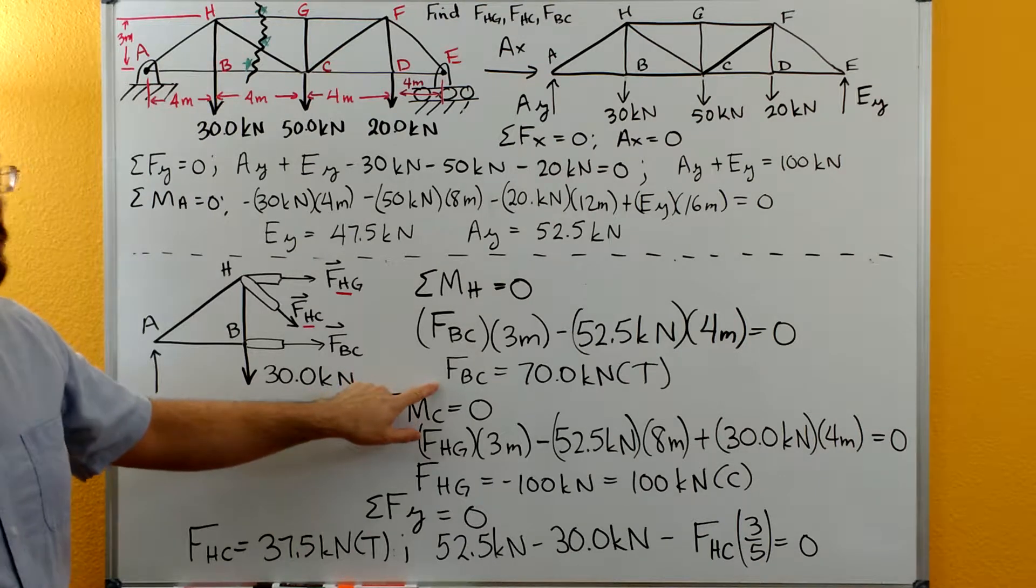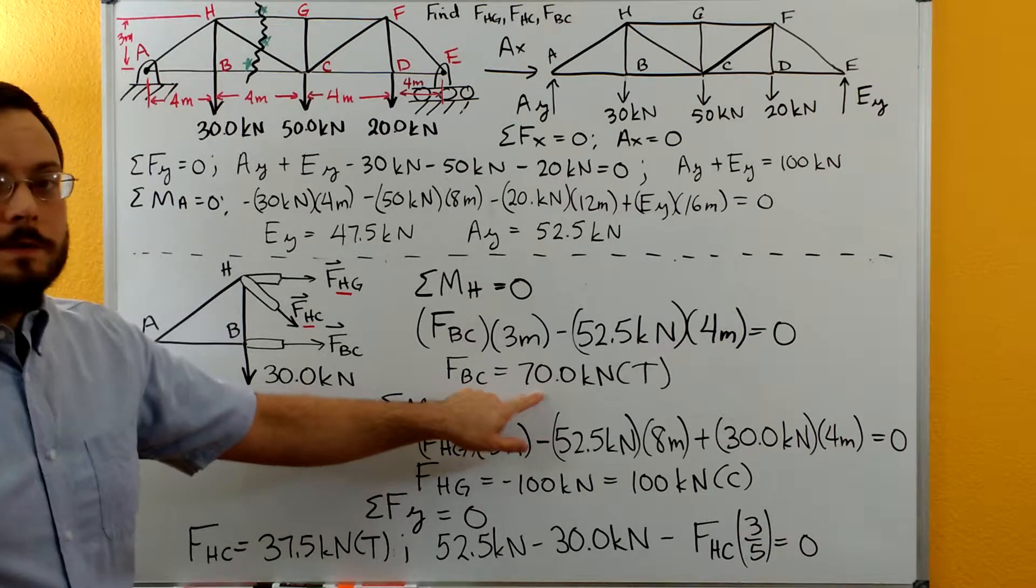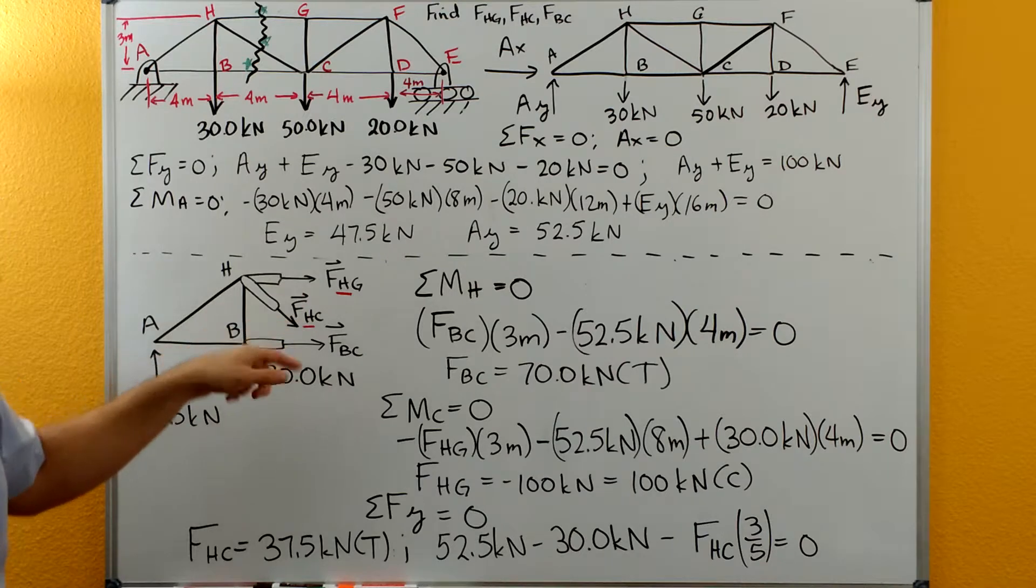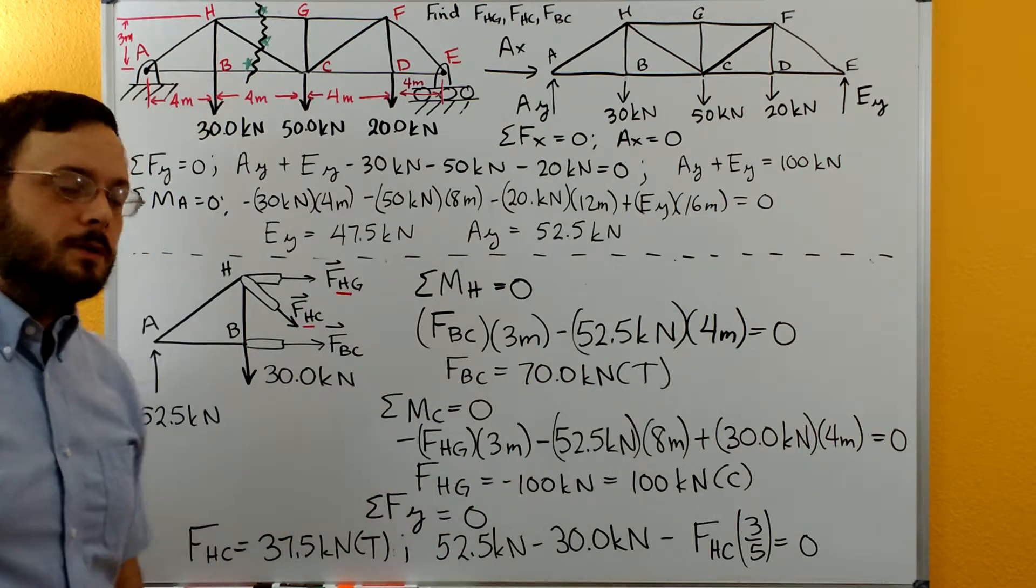We can get FBC as positive 70 kilonewtons. Since it's positive and we drew it as if it was in tension, we know it must be in tension.